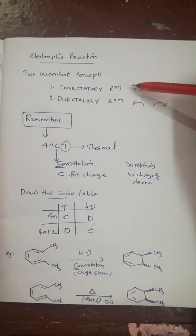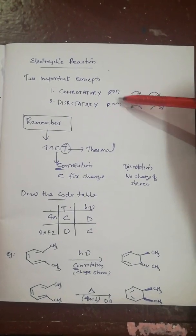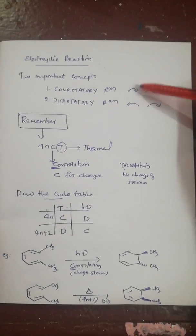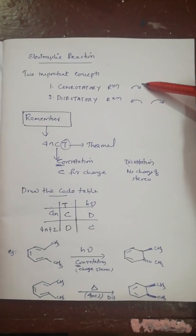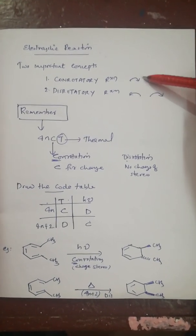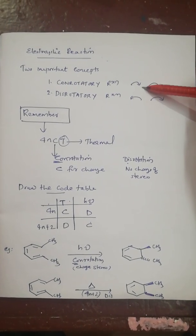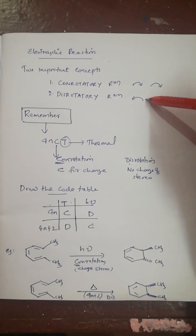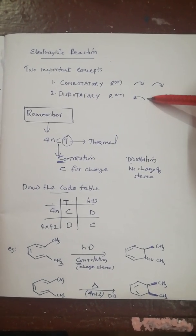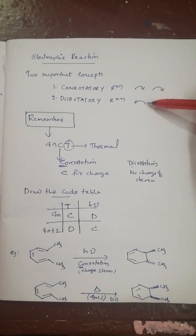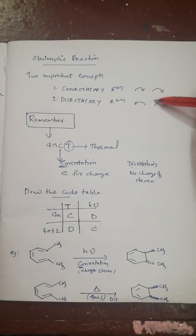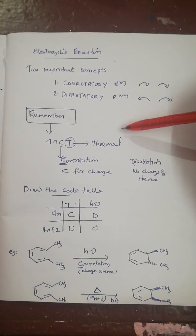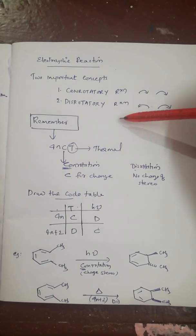There are two types of reactions: conrotatory and disrotatory. In a conrotatory reaction, the movement of pi bonds happens in the same direction — either clockwise or anticlockwise. In a disrotatory reaction, the movement of pi bonds happens in opposite directions — one clockwise and the other anticlockwise.